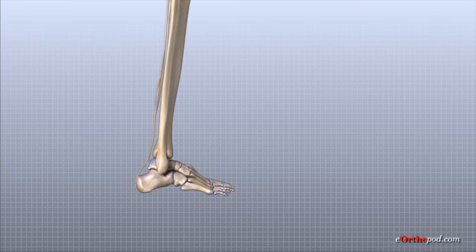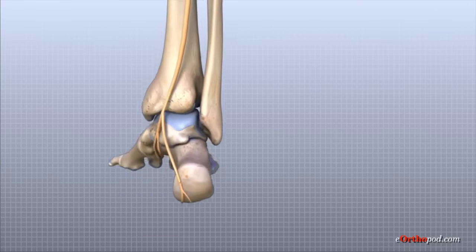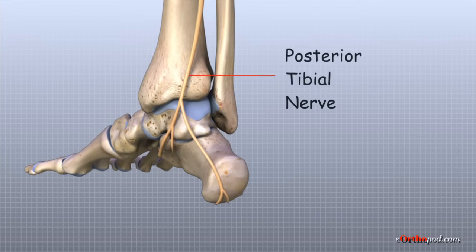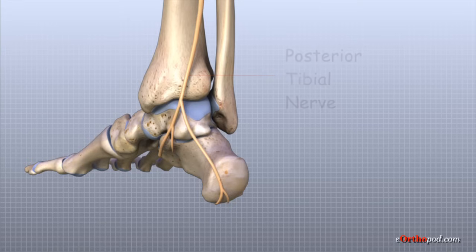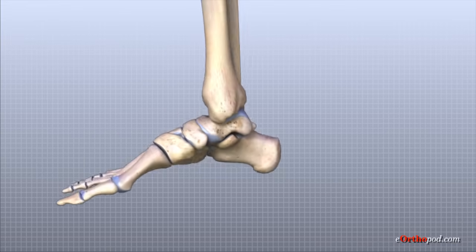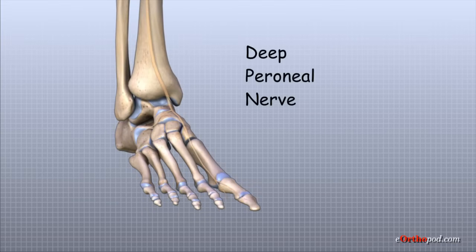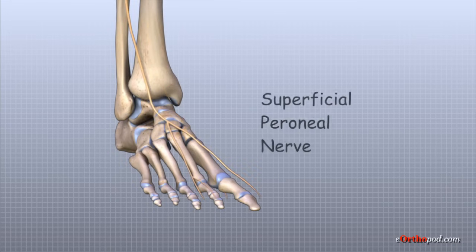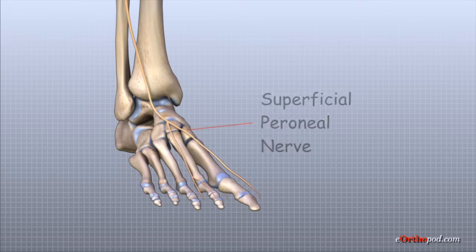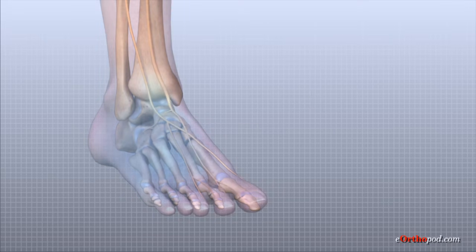The nerve supply of the ankle is from nerves that pass by the ankle on their way into the foot. The large posterior tibial nerve runs behind the medial malleolus and into the foot to control the muscles in the sole of the foot. The deep peroneal nerve crosses in front of the ankle on its way to the top of the foot. Multiple branches of the superficial peroneal nerve cross along the outer edge of the ankle. These nerves control the muscles in this area and give sensation to the top and outside edge of the foot.